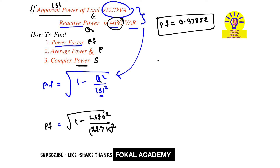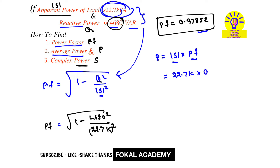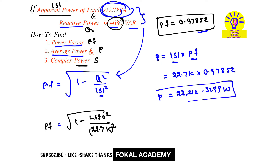Now, average power P equals apparent power multiplied by power factor. The apparent power is already given as 22.7 kilo volt-ampere and the power factor we calculated is 0.97852. Substituting and simplifying, we get the average power equal to 22,212.3299 watts.